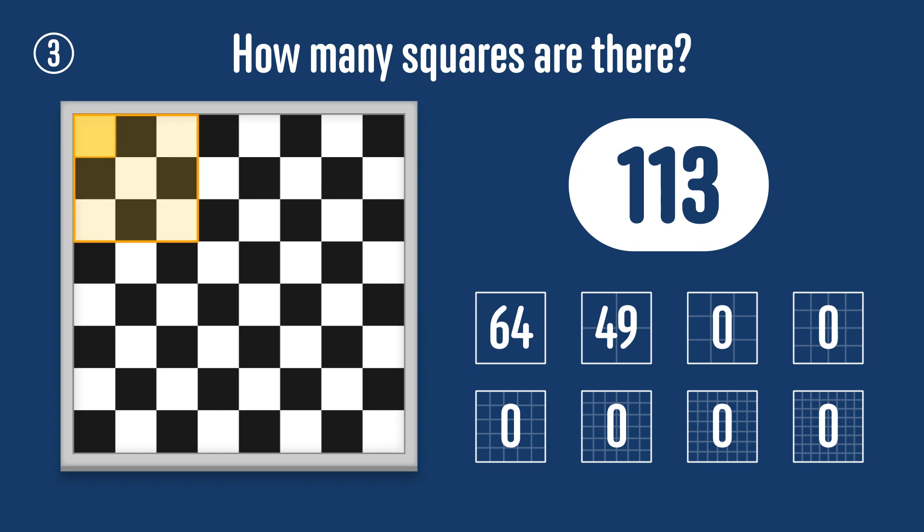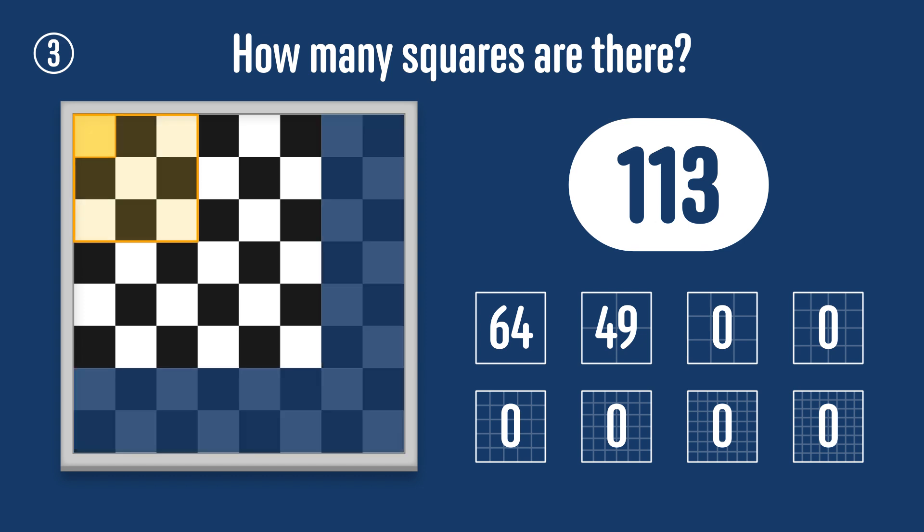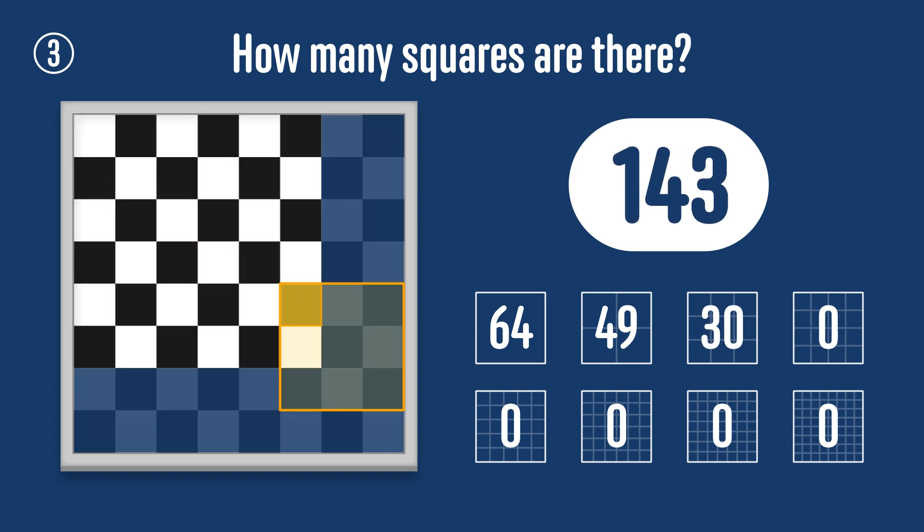Similarly, if we consider three by three squares, their top left square can be anywhere except in the bottom two rows or the two rightmost columns. So there are six times six or 36 positions where we can draw a three by three square.